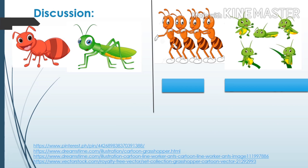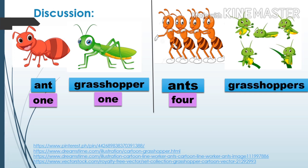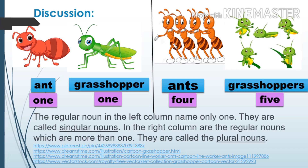Now, let us proceed in our discussion. What do you see in the first picture? It's an ant. How many ants do you see? One. How about the second picture? It's a grasshopper. How many grasshoppers do you see? One. In the third picture? Two grasshoppers. In the fourth picture? Four grasshoppers. In the fifth picture? Five. The regular noun in the left column names only one — they are called singular nouns. In the right column are the regular nouns which are more than one — they are called plural nouns.